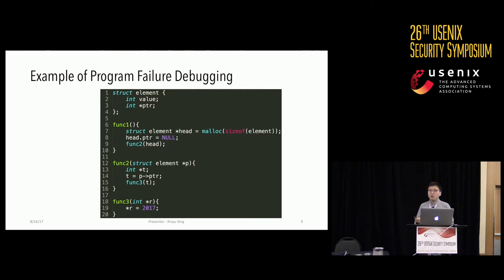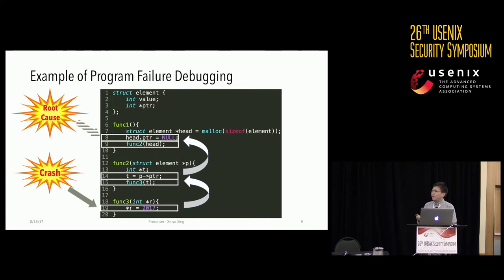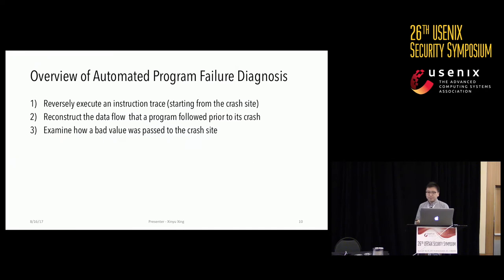This is a program snapshot with a null-pointer dereference defect. When it runs, a null pointer is passed and the program crashes at line 19. To identify the root cause, software developers need to reversely trace how the bad pointer was propagated — through line 15, 14, 9, and line 8, which is the actual root cause of this crash.